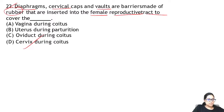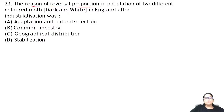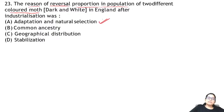Zoology Question 22: what is the reason for the reversal in proportion of two differently coloured moths in the population? This is about industrial melanism in England. Before industrialisation, light coloured moths were more common; after industry came, dark coloured moths became more common. The reason is adaptation and natural selection.